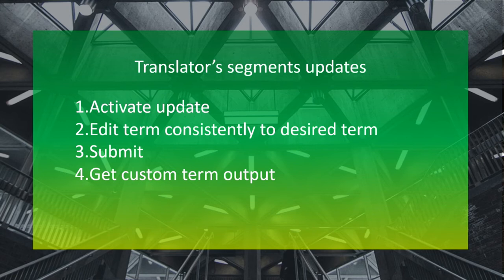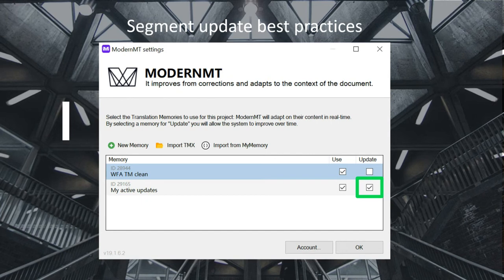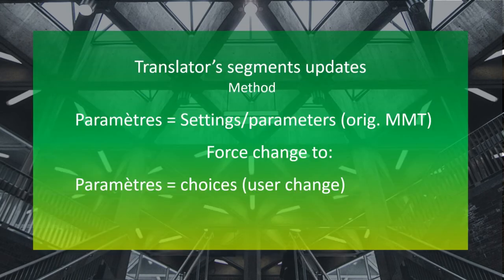Now let's talk about a feature that I think will be very useful to translators — the Translator's Segments Update. With this feature, the edits you apply to translated segments, when you commit them, are sent back to the modern MT cloud and added to your TM on the cloud. This means that over time, you can force the MT to use terminology and style that you prefer. To enable this function, you need to tick the box beside the TM you want to use as a reference and select 'use and update.'